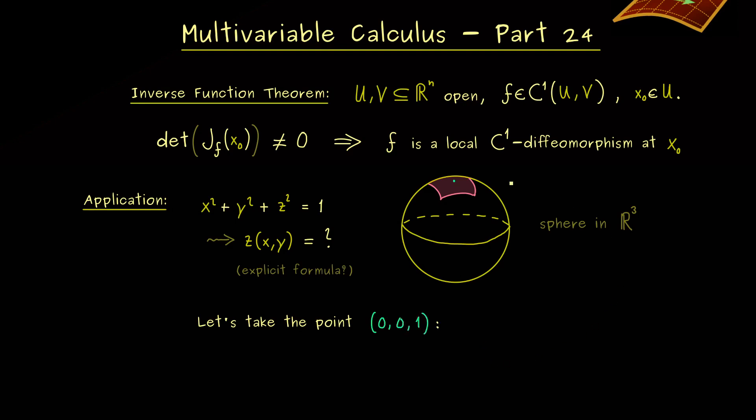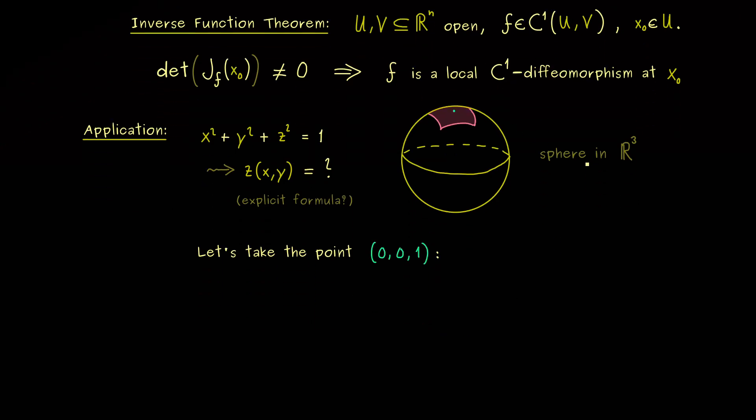And now the whole thing can only make sense if the function f sends R³ to R³. In other words, our C1 function here needs three variables as an input. So we have x, y, z for the inputs, but we also need three variables as an output. Otherwise our inverse function theorem would not be applicable.